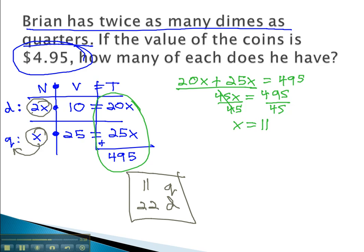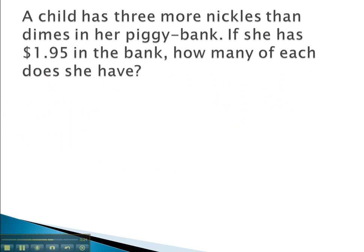Let's take a look at another example where we have to set up a value table in order to answer the question. In this problem, a child has 3 more nickels than dimes. We have some number, value, and a total. We might even label that we're talking about nickels and dimes.